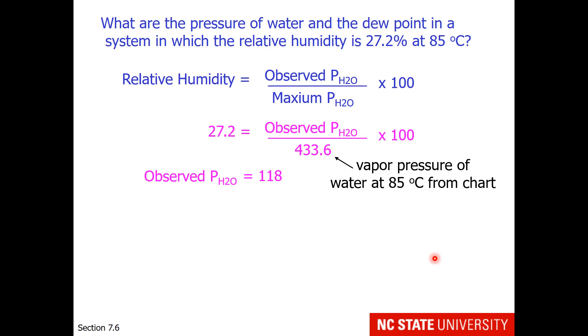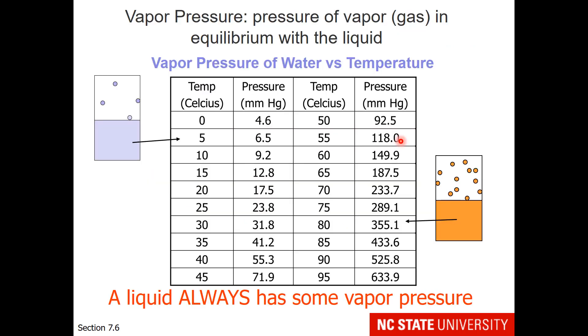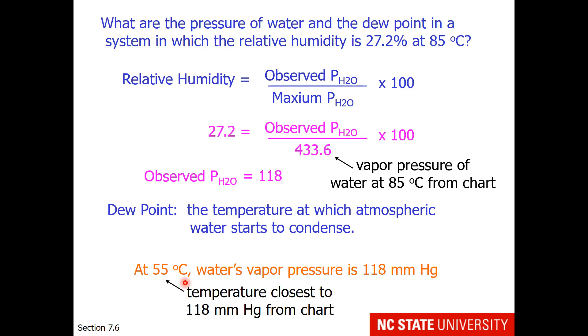The next part of this question asks for the dew point. What happens at the dew point? Well, dew forms, meaning it's almost ready to rain. So what we need to do is find the temperature at which atmospheric water starts to condense, meaning we are at 100% humidity. So this value of 118, we need to go back to the chart and look for it. And there it is, it's next to 55 degrees Celsius. So at 55 degrees Celsius it will start to rain.